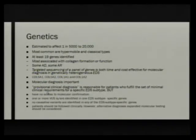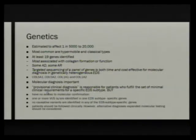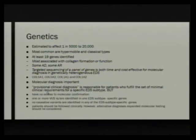Genetics: estimated to affect one in 5,000 to one in 20,000. So far they have identified 19 different genes. The most common are the hypermobile and classic types. Unfortunately, hypermobile is the only one that does not have an affiliated gene mutation. They're all associated with collagen formation or function. Some are autosomal dominant, some are autosomal recessive. The new consortium position is that targeted sequencing of a gene panel is the most cost-effective way to make a diagnosis, pushing for molecular diagnoses on these patients.